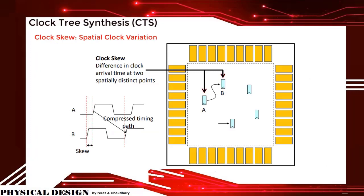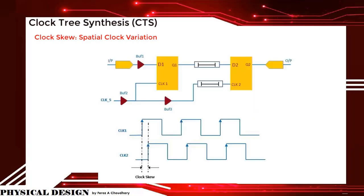Clock skew: before going to clock skew, let me explain clock uncertainty. Clock uncertainty is the time difference between the arrival of the clock signal at a register in one clock domain or between domains. Under uncertainties, there are clock skew, clock jitter, and clock margin. Clock skew refers to the absolute time difference in clock signal arrival between two points in the clock network. TSQ can be given as tLaunch_clock minus tCapture_clock. In the figure, both clock inputs are not getting the clock at the same time because of buffer delay — clock 1 receives a delay of one buffer and clock 2 receives a delay of two buffers. That variation is called clock skew.